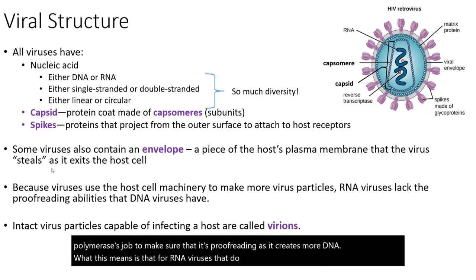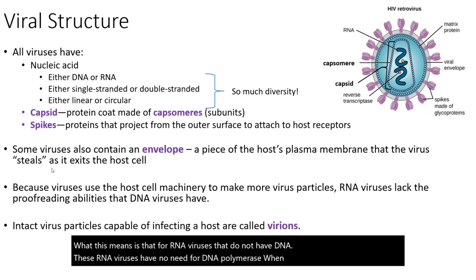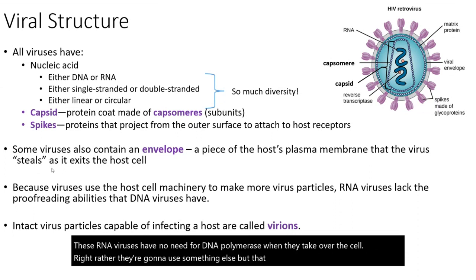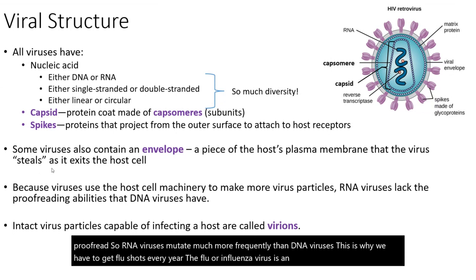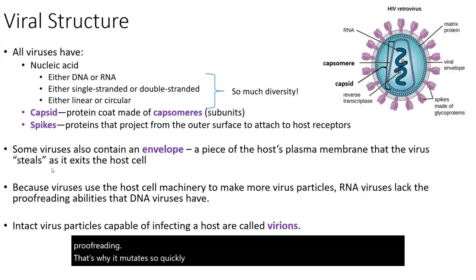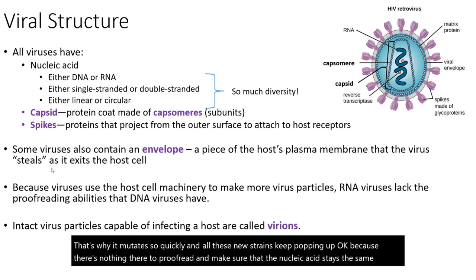For RNA viruses that do not have DNA, they have no need for DNA polymerase when they take over the cell — they use something else, which means they aren't going to be proofread. So RNA viruses mutate much more frequently than DNA viruses. This is why we have to get flu shots every year — influenza is an RNA virus that mutates very rapidly. SARS-CoV-2, which causes COVID, is also an RNA virus with no proofreading, which is why it mutates so quickly and new strains keep popping up.